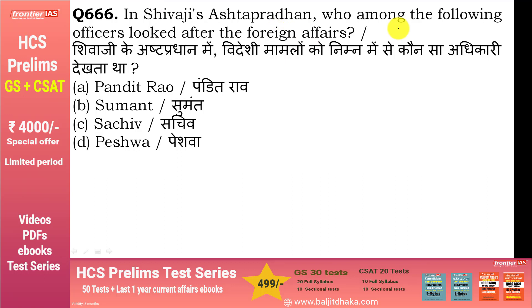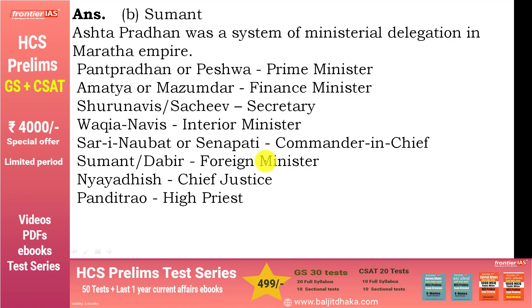In Shivaji's Ashta Pradhan, who looked after foreign affairs? Option B — Sumant. Shivaji की Ashta Pradhan में: पंत प्रधान या पेशवा (Prime Minister), अमात्य या मजुमदार (Finance Minister), सुरू नावीस या सचिव (Secretary), वाकया नवीस (Interior Minister), सरेनौबत या सेनापति (Commander-in-Chief), सुमंत या दाबीर (Foreign Minister), न्यायाधीश (Chief Justice), और पंडितराव (High Priest).